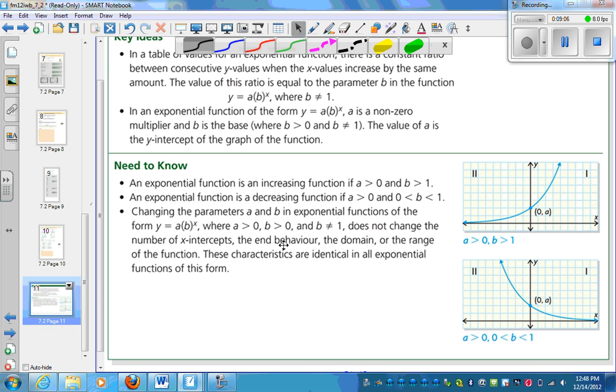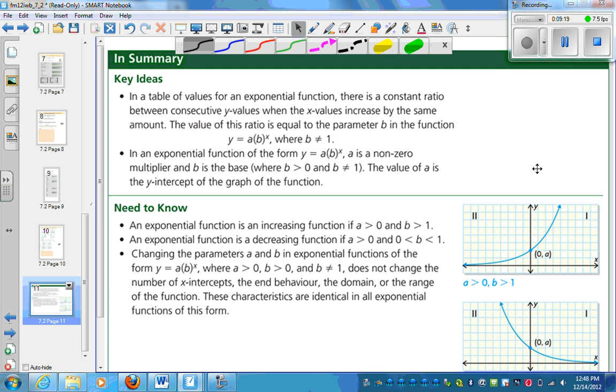So end behavior is always the same. X-intercepts, there's always none. Domain, any x value. Range is always bigger than zero, y is always bigger than zero. So in a lot of ways, exponential is a little easier than polynomial because all of this stuff is the same. All we have to remember is how that y-intercept is what makes the y-intercept what it is, and if it's increasing or decreasing.